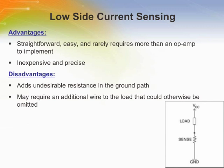Low side current sensing techniques connect the current sensor element between the load and ground. Current is measured by looking at the voltage drop across the resistor placed between the load and ground. Low side current sensing is straightforward, easy, and rarely requires more than an op-amp to implement.